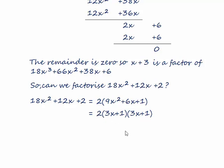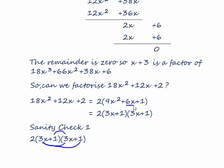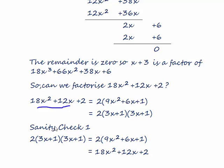Let's do a quick sanity check to make sure that we're correct. We've got 3x times 3x, which is 9x squared. We've got 3x times 1, which is 3x. We've got 1 times 3x, which is another 3x, which means we've got 6x. And then we've got 1 times 1, which gives us 1. Now we multiply by 2, and we get 18x squared plus 12x plus 2, which is where we started.